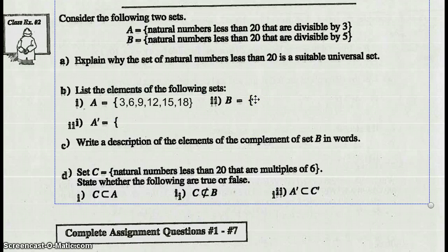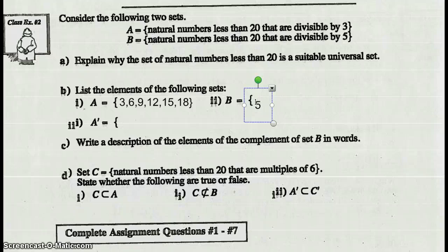Elements in set B: natural numbers less than 20 divisible by 5. Well, those should be 5, 10, and 15.